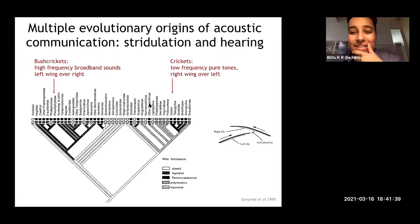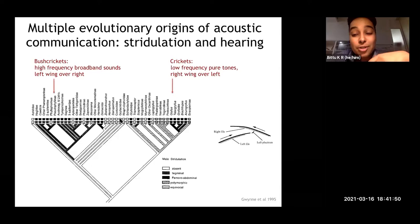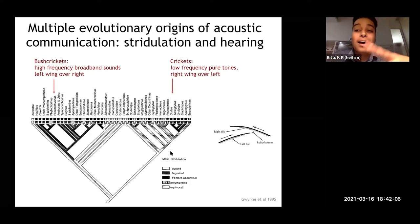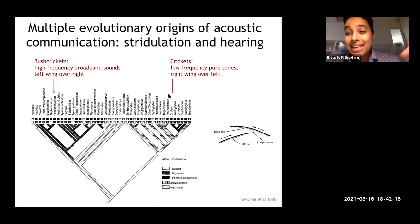The big question is: was there a common ancestor with sound production and reception of this kind, with some lineages losing hearing? Or was there a common ancestor without hearing, from which hearing and sound emerged independently? This is particularly interesting because it's a matched system — you have no communication if you just have sound production and no reception, or vice versa. Yet one sees both these systems emerge in both crickets and bush crickets.